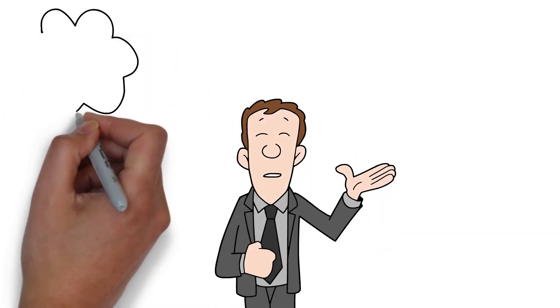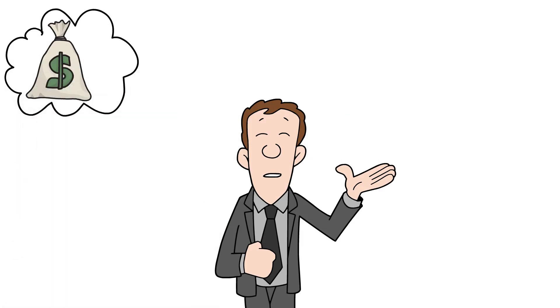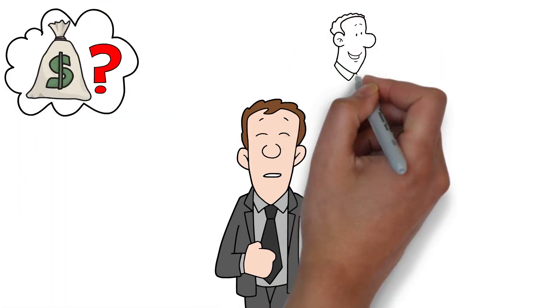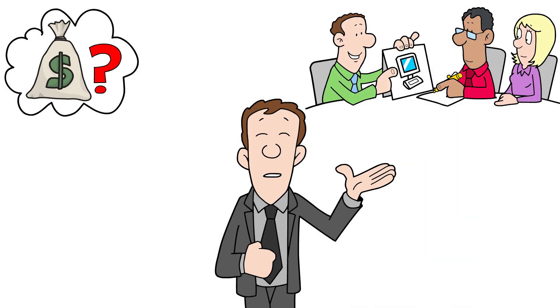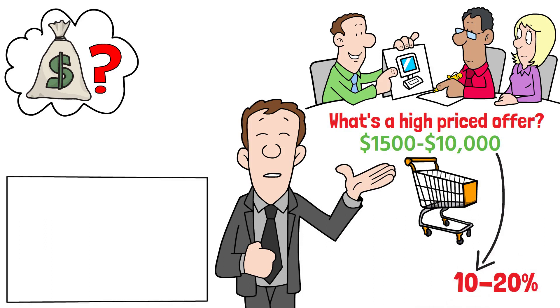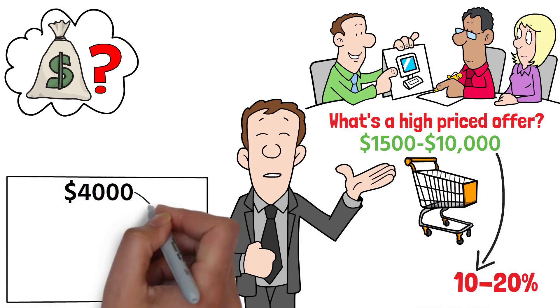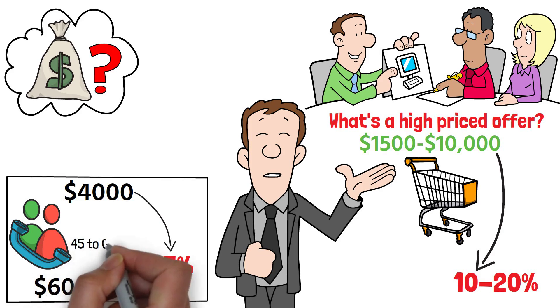Becoming a high-priced salesperson is, in my eyes, the most lucrative way to really make a lot of money besides your job. Why? You don't need much to start. You only need one skill, to be able to sell, and someone with a high-priced offer to sell for. What's a high-priced offer? $1,500 to $10,000. For each sale, you get a commission between 10% to 20%. Now, if you sell a product for $4,000 and get 15% commission on that, you get $600 per sale in one phone call, which is about 45 to 60 minutes.